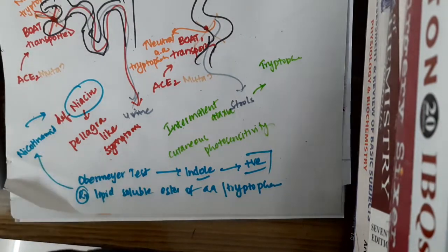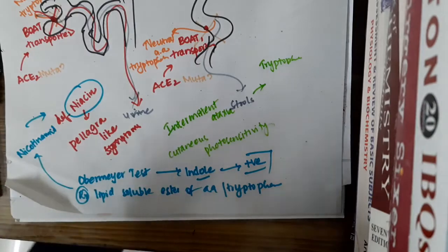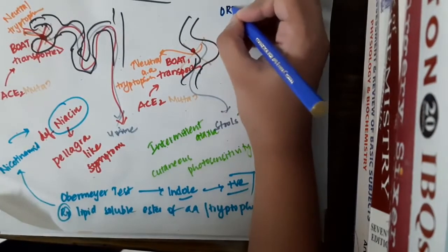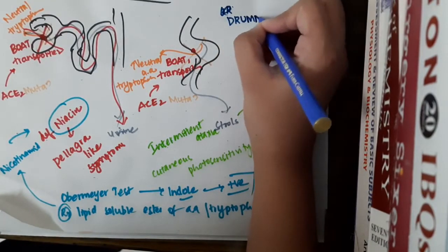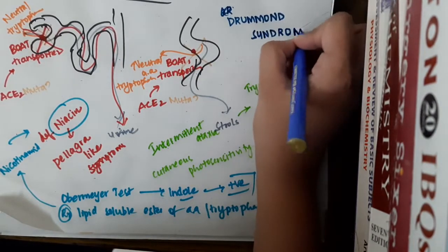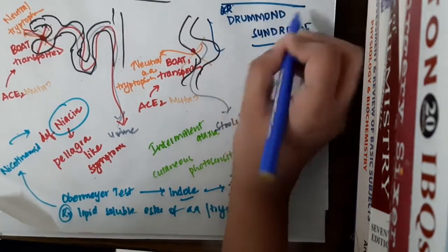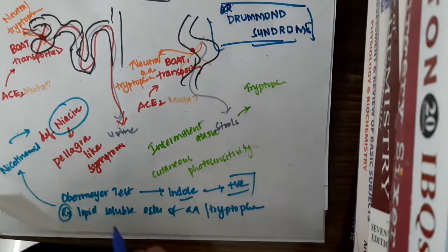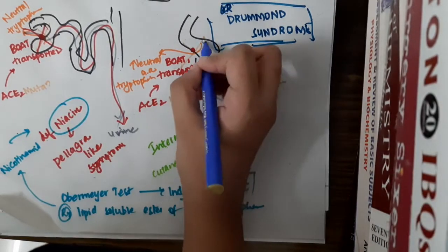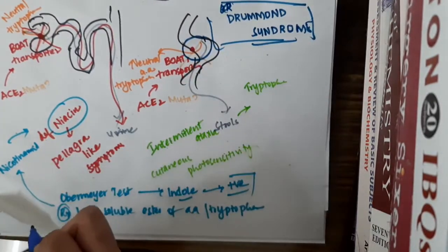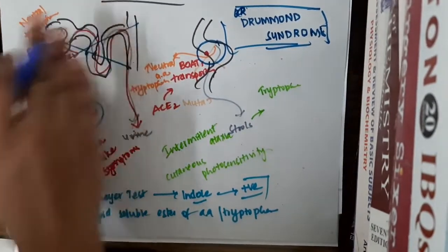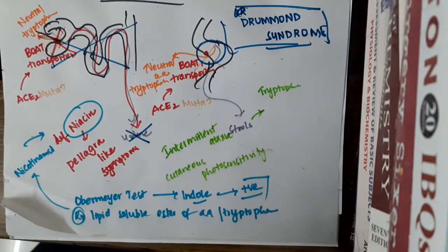There is one variant related to Hartnup disease called Drummond syndrome. In Drummond syndrome, there is also defective malabsorption, but this defective malabsorption is present only in the intestine. There is no issue in the kidney — the kidney is normal — so there is no tryptophan in the urine.